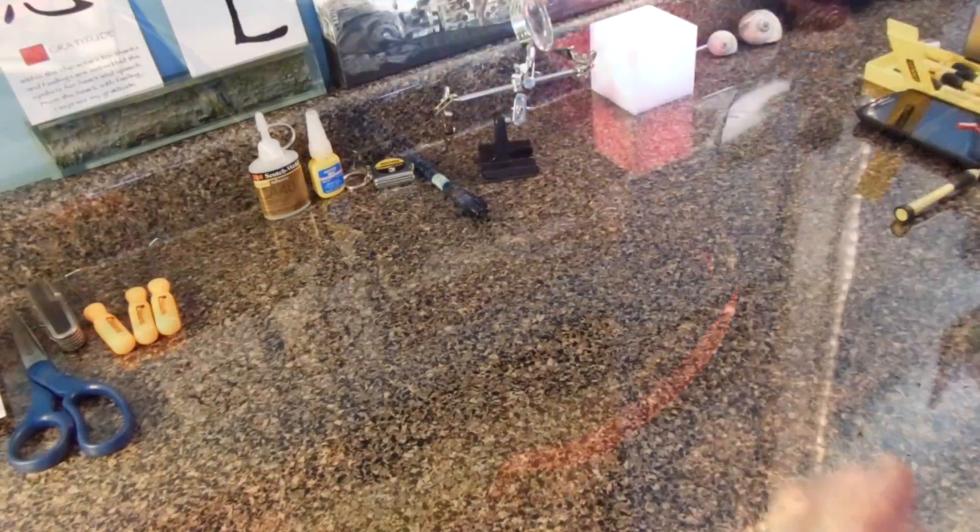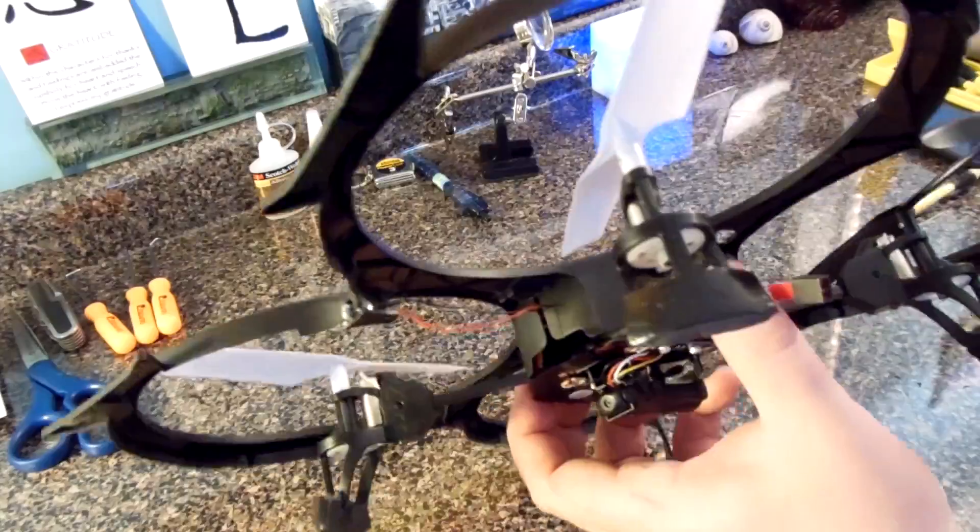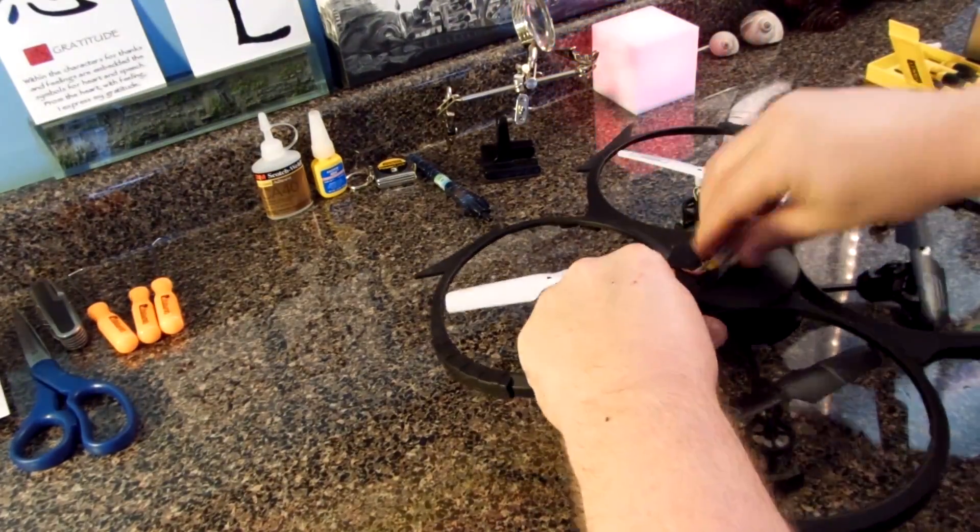Here you can see that the prop guard is now turned the correct way so that the LED light is on the same side as the camera.